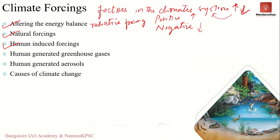Human-induced climate forcing is caused by human activities including the emission of greenhouse gases and aerosols from burning fossil fuels, and modifications of the land surface such as deforestation, which removes greenhouse gases from the atmosphere. Greenhouse gases result in a positive impact — increased warming. Carbon dioxide emitted from burning fossil fuels is presently the largest single climate forcing agent, accounting for more than half of the total positive forcing since the 1750s, since the industrial revolution.